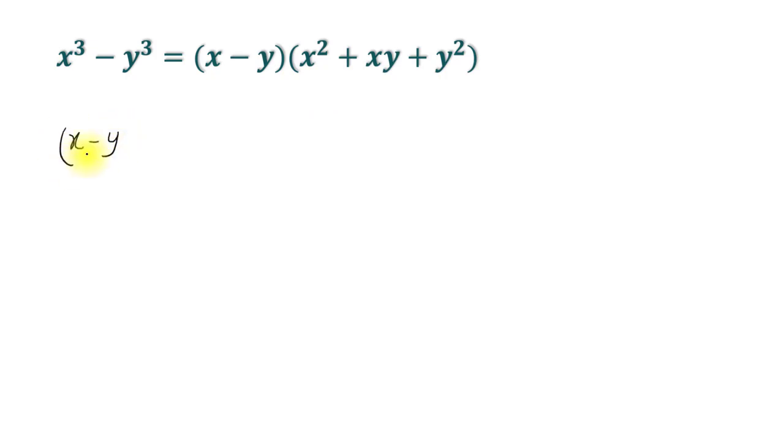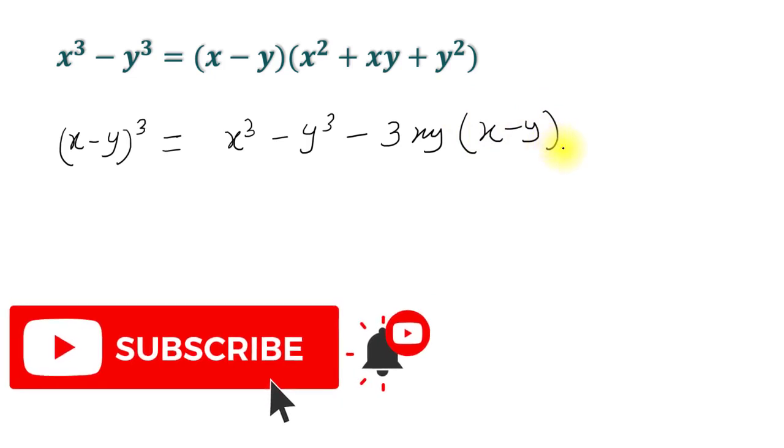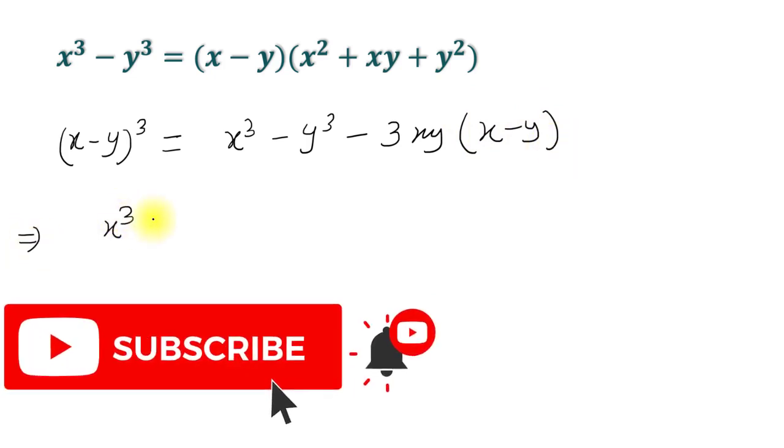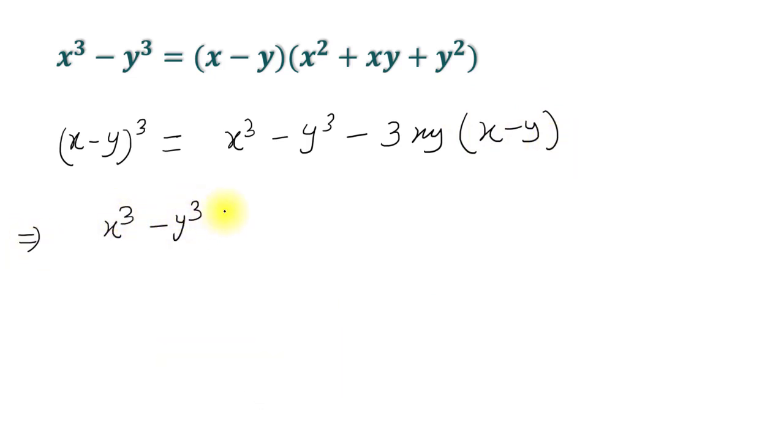(x - y)³ equals x³ - y³ - 3xy(x - y). This implies x³ - y³, that means this term, is equal to (x - y)³ + 3xy(x - y).